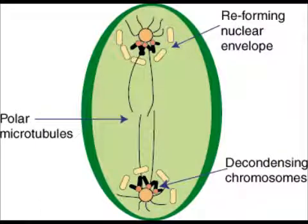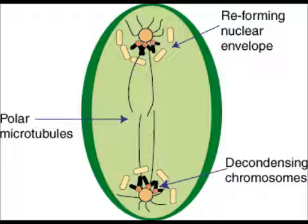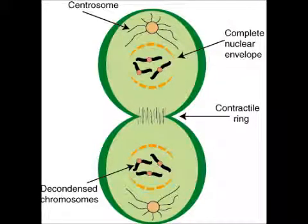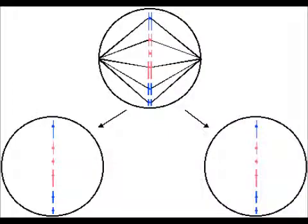Telophase concludes the nuclear division. During this phase, a nuclear envelope develops around each pole, forming two nuclei. The chromosomes within each of these nuclei disperse into chromatin, and the nucleoli reappear. After telophase, cytokinesis divides the cytoplasm to form two cells. The results of mitosis are two identical daughter cells that have 46 chromosomes each, arranged into 23 homologous pairs.